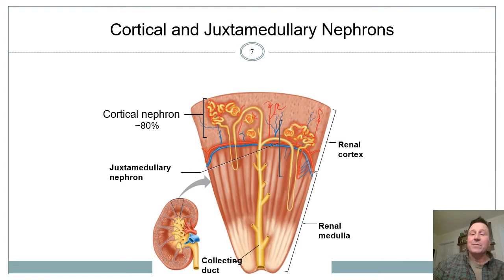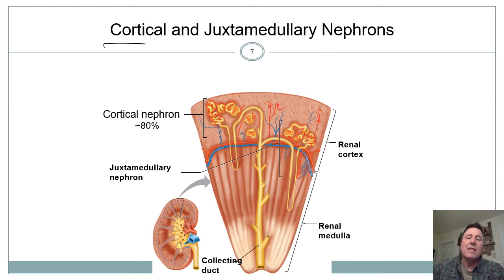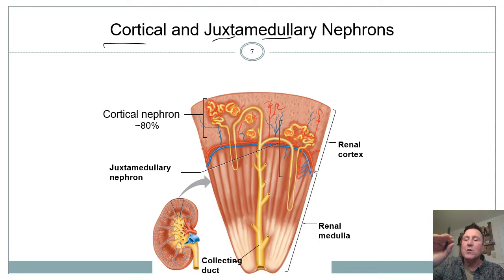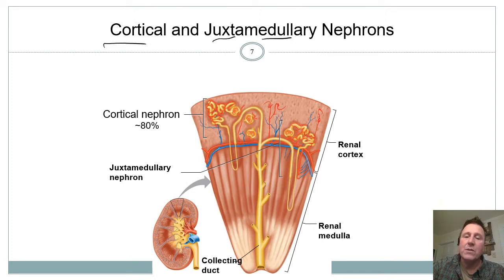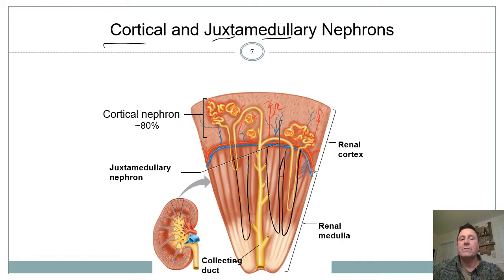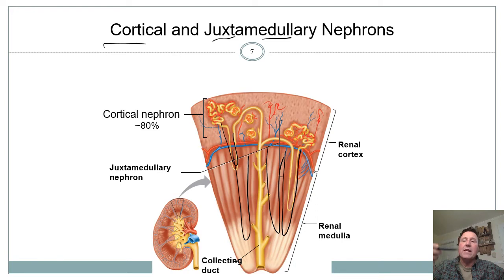There are two types of nephrons. About 80% are cortical nephrons scattered in the cortex. The other 20% are juxtamedullary nephrons — right next to the medulla, deep in the cortex on the edge of the pyramid. The juxtamedullary nephrons are very important in controlling water — how much you pee out versus conserve — because they have long loops of Henle. They set up a really salty gradient, helping you conserve water when needed.